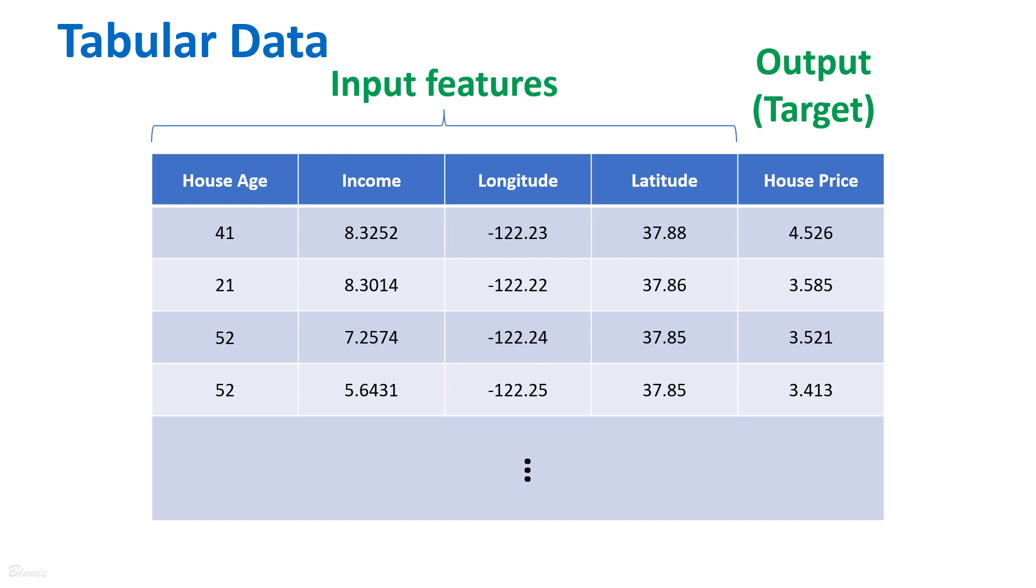However, tabular data is another common data type in real-world applications. Like a spreadsheet or database table, each row represents an individual record, and each column represents a feature or variable. We also have a target column in which we use the features to make predictions. Tabular data is used in many practical applications.